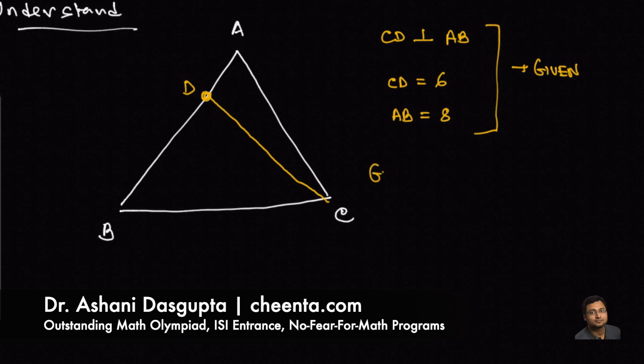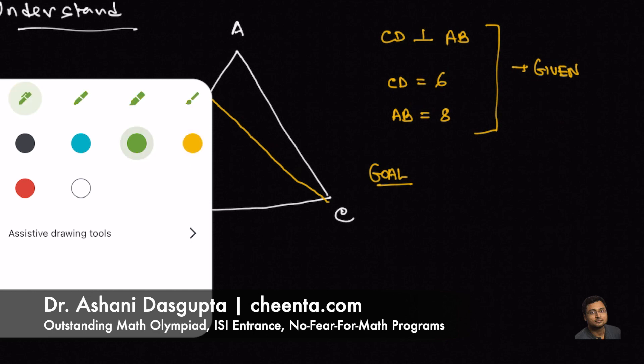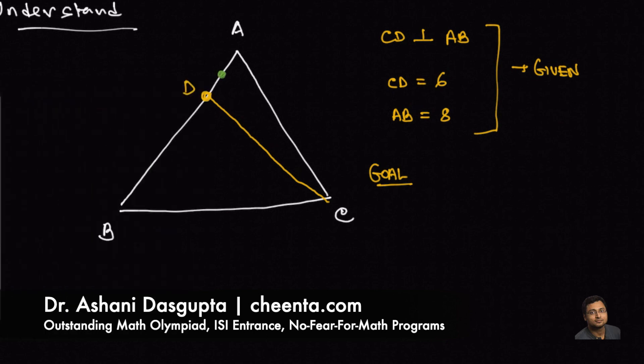Now, our goal is the following. Suppose the midpoint of AD is P, and the midpoint of BC is Q. Our goal is to find out the length of PQ.